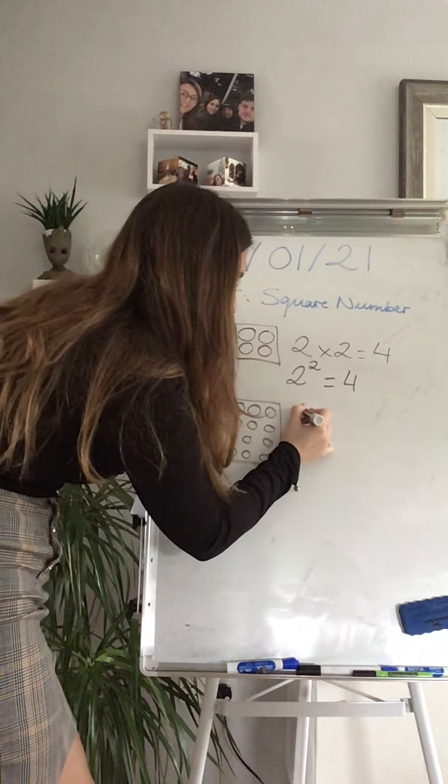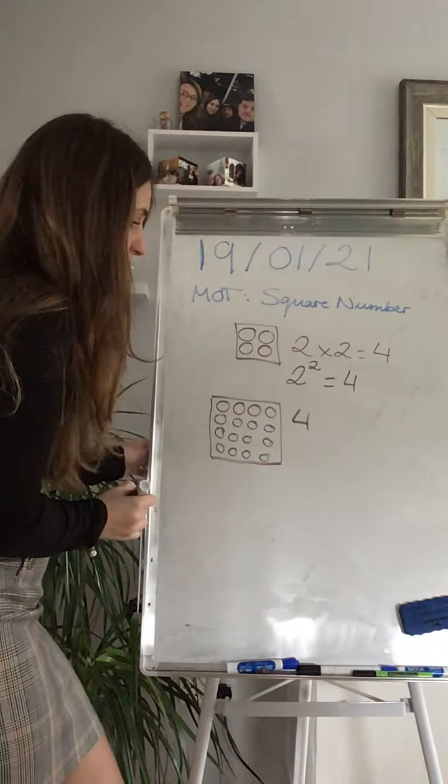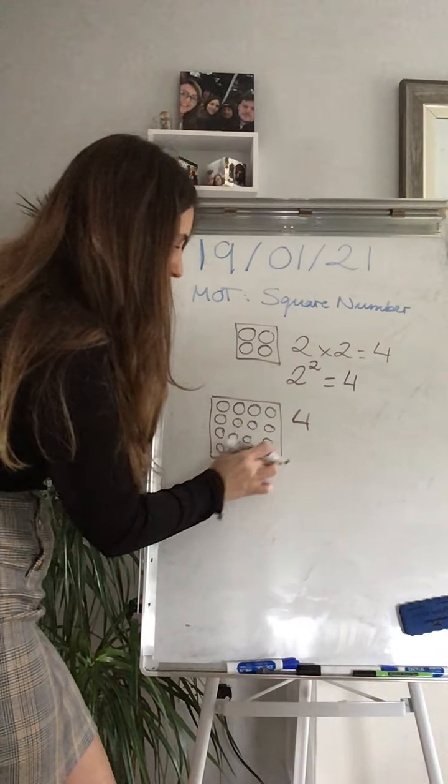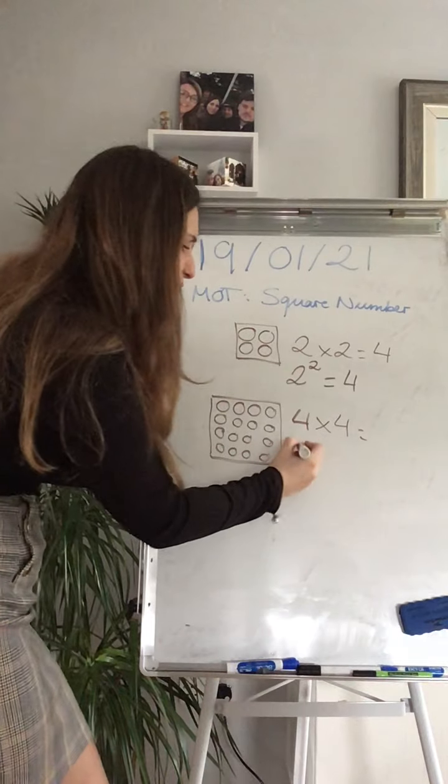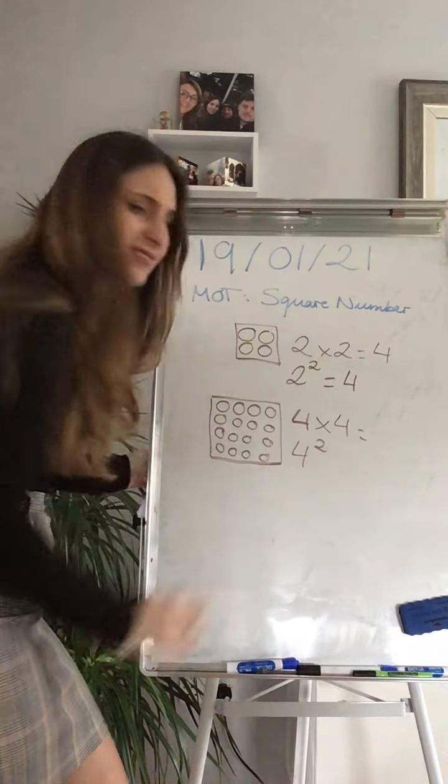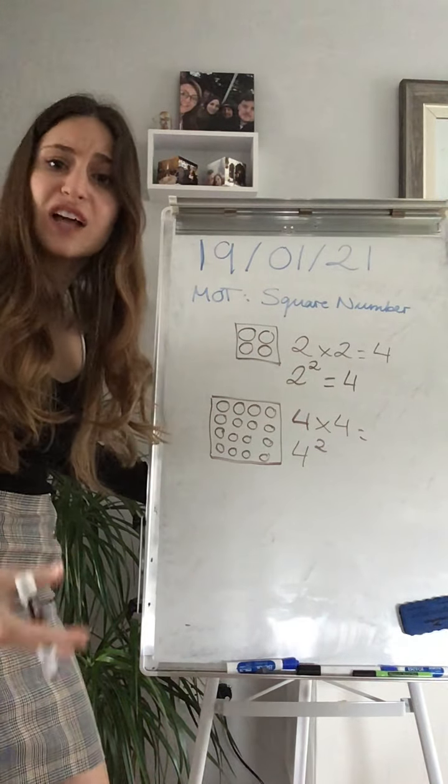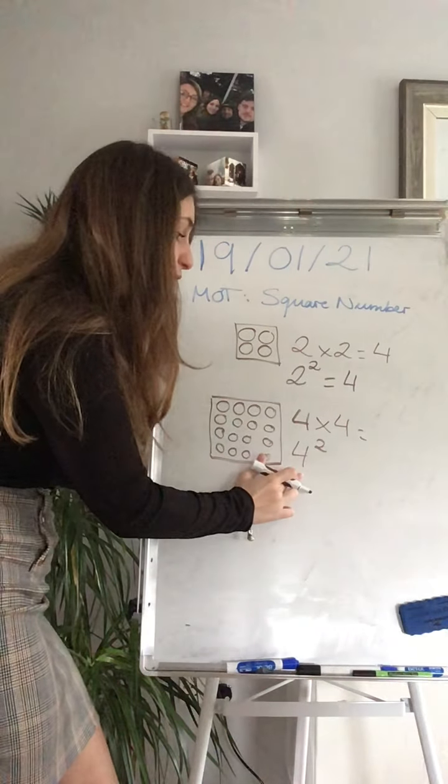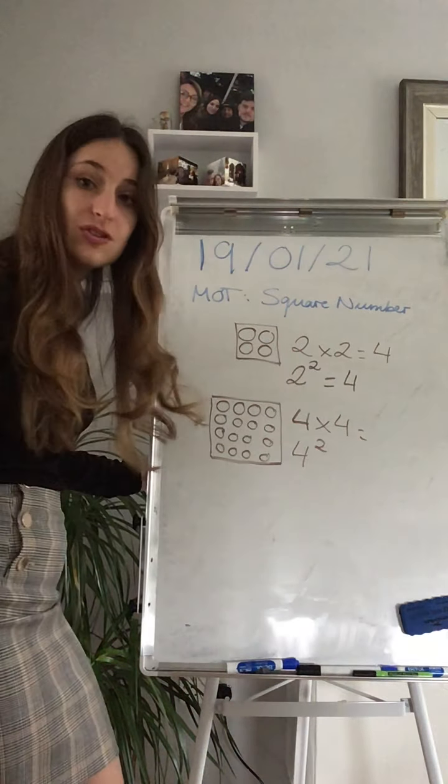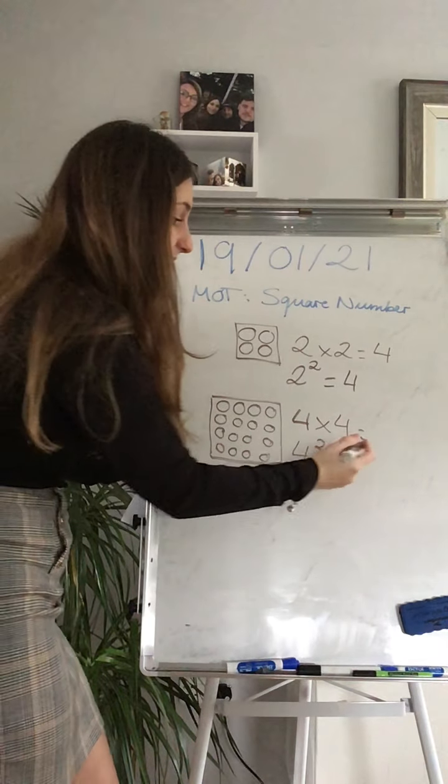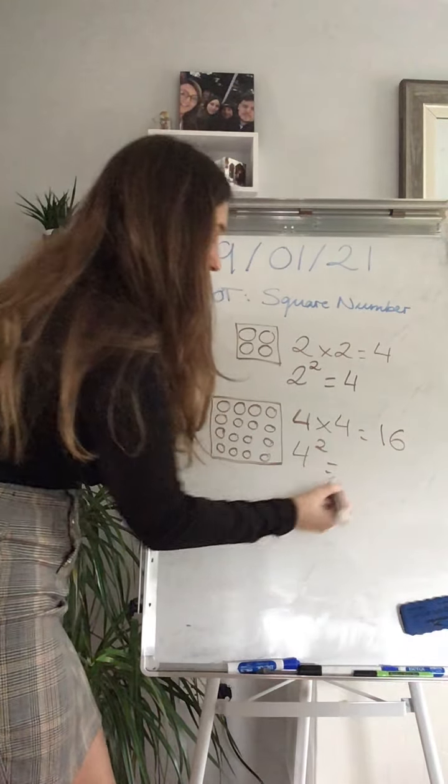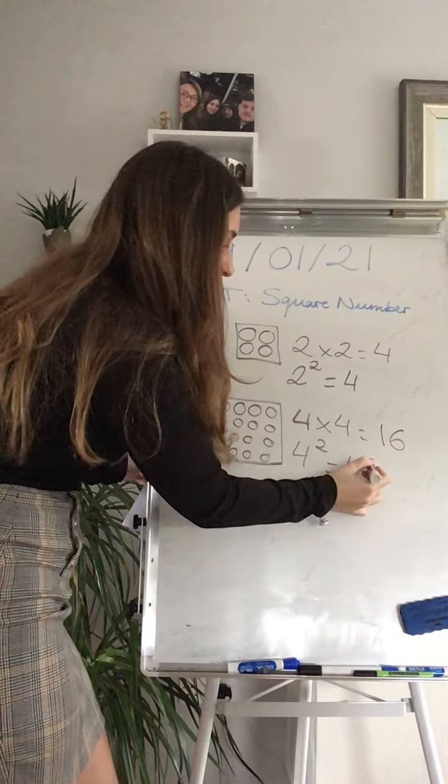I have 1, 2, 3, 4. And I have 1, 2, 3, 4. So I have 4 times 4. So I have 4 twice. 4 times itself. 4 times 4, 2 times, 2 fours. So 4 times 4 is 16. 4 times 4 is 16.